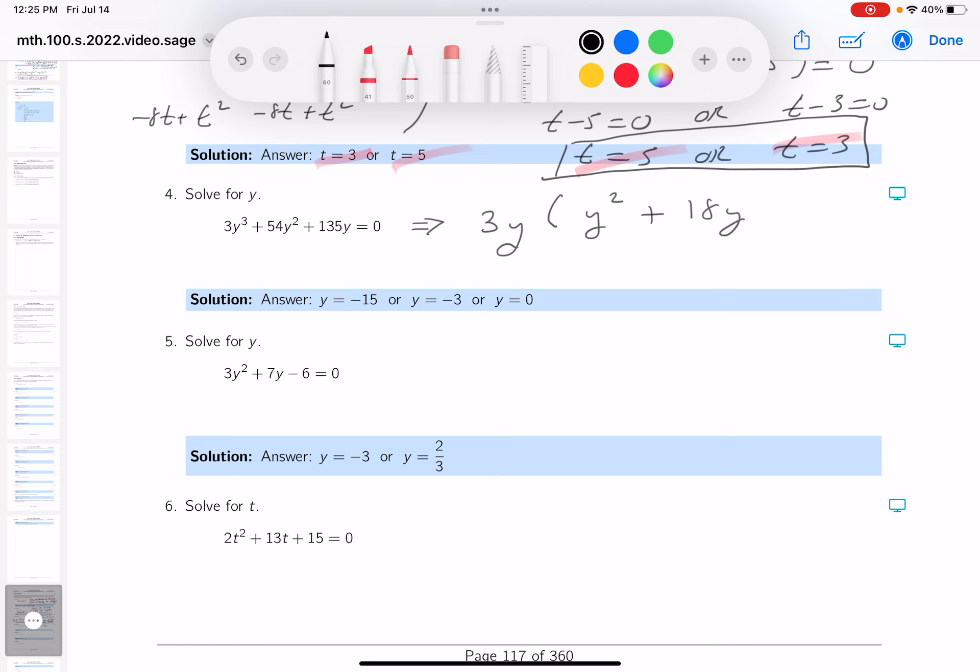y. Three times 18 is 54. And three times what would give you 135? That's 45, and you already have a y. That's equal to zero.